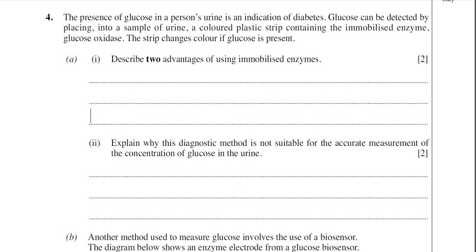This is question 4 from the June 2010 BY-1 paper — an immobilised enzyme question. Question 3 was actually a question on enzyme activity, so in this particular paper you've got two separate questions on enzymes. The presence of glucose in a person's urine is an indication of diabetes. Glucose can be detected by placing into a sample of urine a coloured plastic strip containing the immobilised enzyme glucose oxidase.